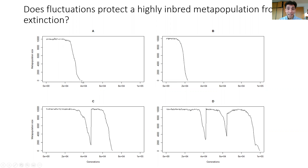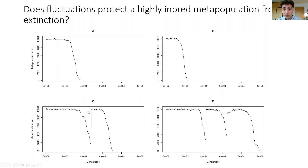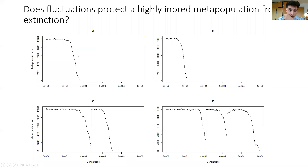However, for the exact same parameter values, sometimes you actually get these recolonization dynamics — as shown in panels C and D. Sometimes the population will approach extinction and then really, really quickly just bounce back: dispersal will occur, dispersal will be favored by selection, recolonization will occur, and the population goes on to live a little longer.